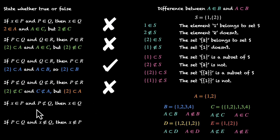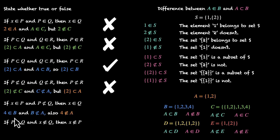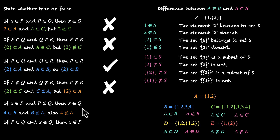Statement 5: if X belongs to P and P is not a subset of Q, then X belongs to Q. This seems counterintuitive and false. For example: 4 belongs to B, and B is not a subset of A — you can't make B from the elements of A. But 4 also does not belong to A. The statement claims 4 should belong to A, but it doesn't. So this statement is incorrect — it's false.